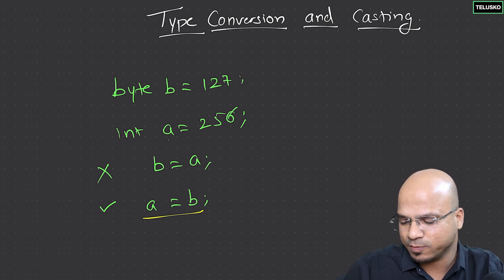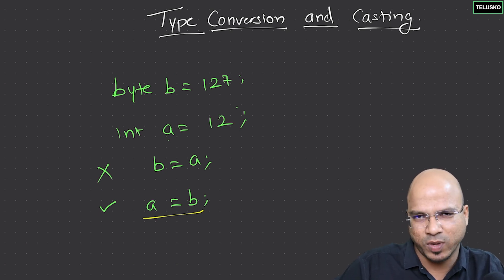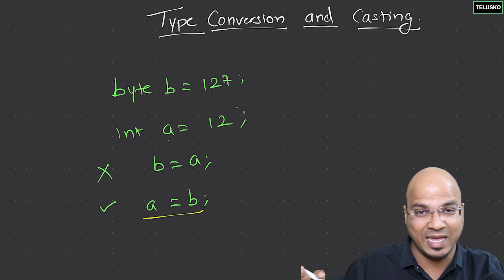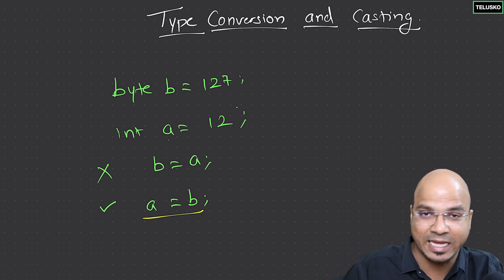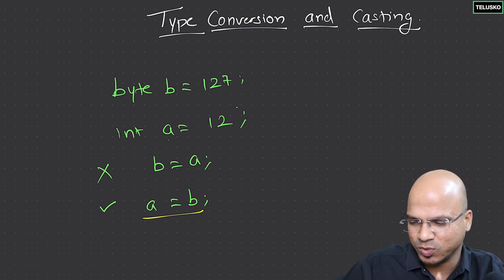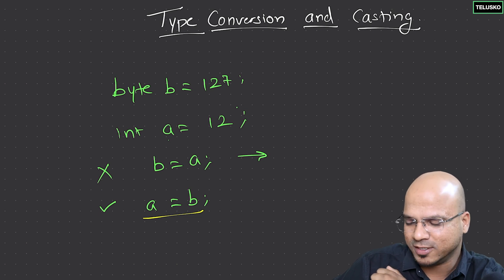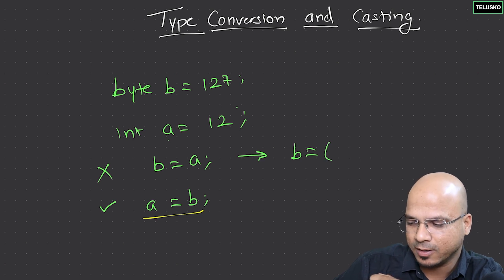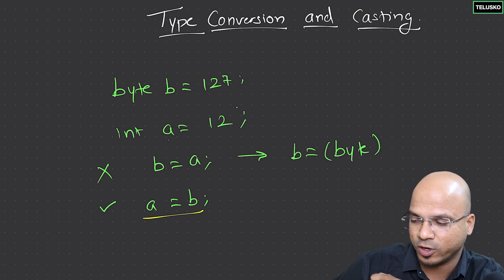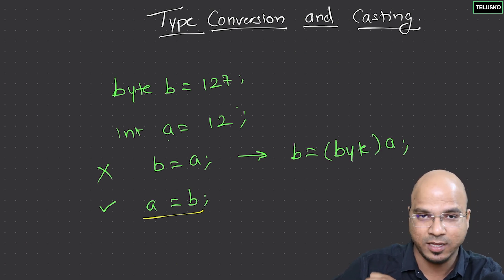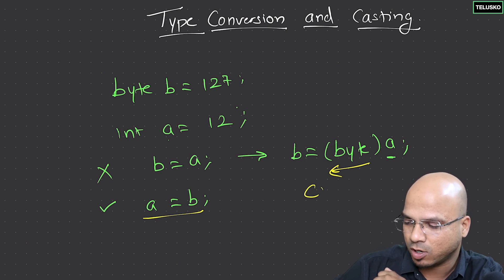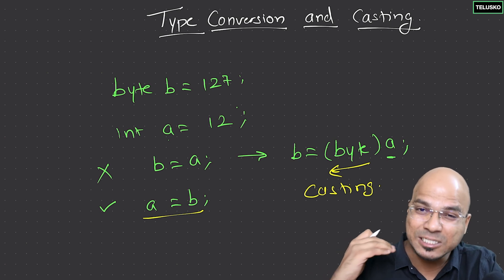What if you really want to convert an integer value into byte? Even if the value of a is 12, which can be accommodated in byte, the compiler will still not allow it because a is integer and b is byte. In that case you can explicitly cast it: write b = (byte) a. You specify the target type in brackets before the variable name. This concept is called casting — you are doing an explicit conversion.